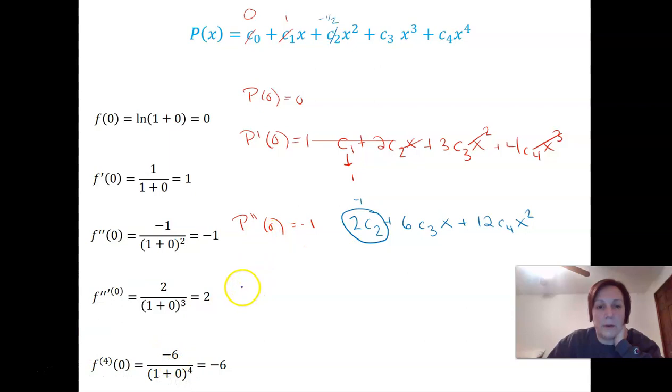Same thing for my second derivative. If I plug a 0 into the second derivative, I want to get a negative 1 this time. So let's take the second derivative of this function. Let's take the derivative of the derivative. So the derivative of 2c2x is 2c2. The derivative of 3c3x squared is 6c3x. The derivative of 4c4x cubed is now 12c4x squared. Again, I want to plug a 0 into this and I want it to come out to negative 1. So this has to be negative 1, my constant. Well, that means that c2 has to be negative 1 half. So here, negative 1 half.